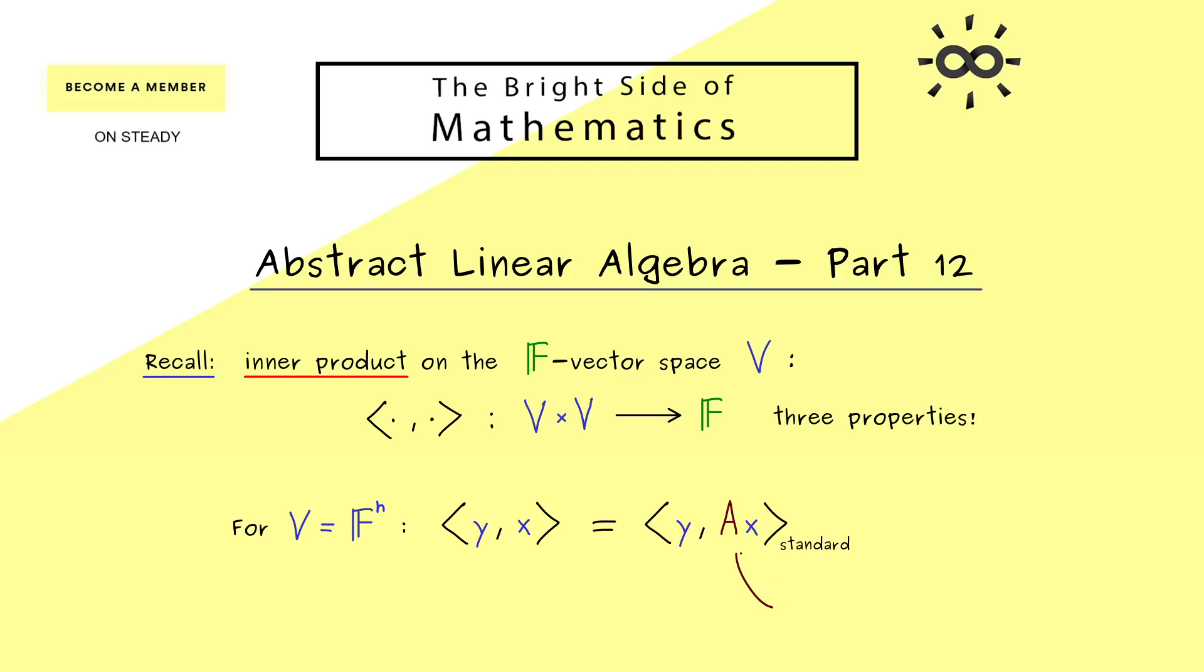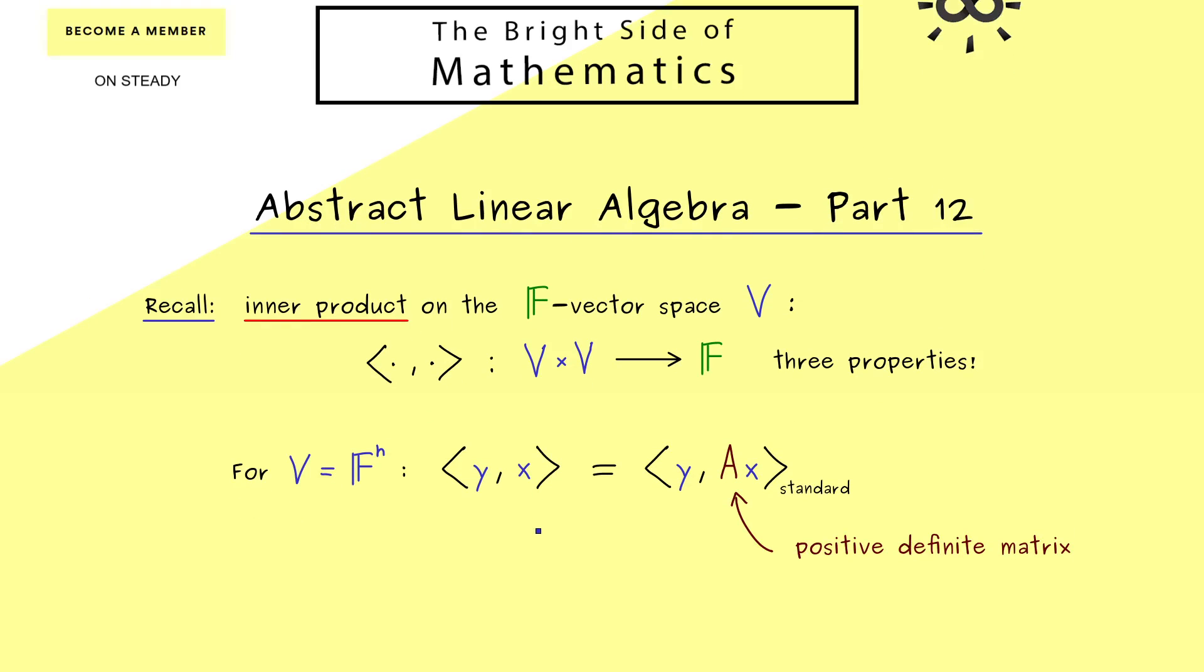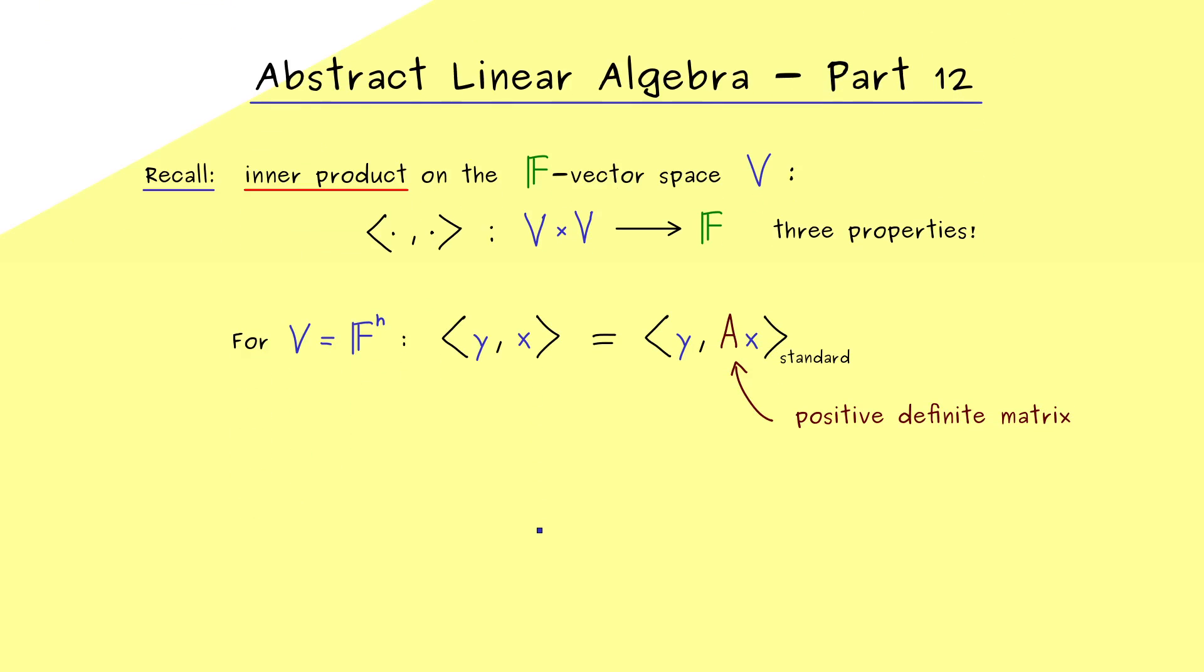This means, if we put in two vectors y and x, then we find a positive definite matrix A such that the general inner product here is equal to the standard inner product where we have the matrix A inside. However, please don't forget the important ingredient, this matrix has to be positive definite. Okay, and at this point you might ask, what can we do with inner products in linear algebra?